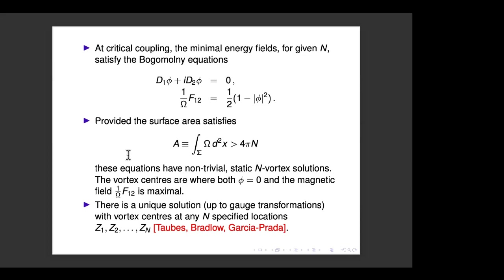Once this Bradlow condition is satisfied, vortices exist — their existence was established by Bradlow and García-Prada, generalizing work of Taubes in the plane. There are non-trivial static N-vortex solutions: the vortex centers can be at N arbitrary locations on the surface. A vortex center is where φ = 0, which are isolated points; at these points the magnetic field is maximal. There's a unique solution up to gauge transformation for any N specified locations.